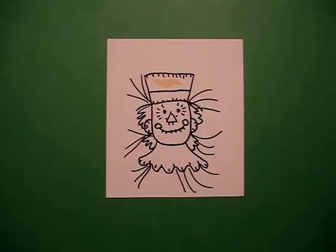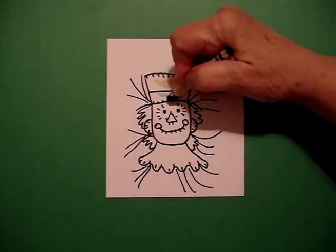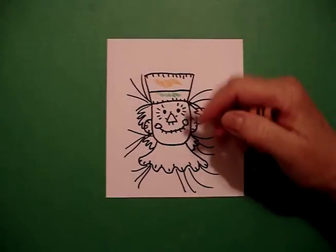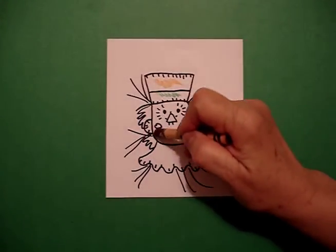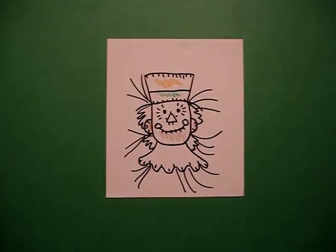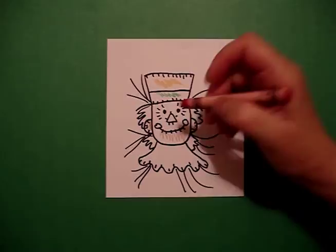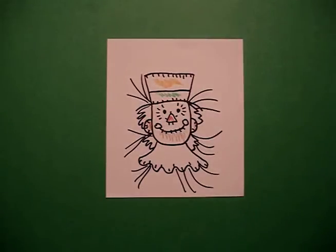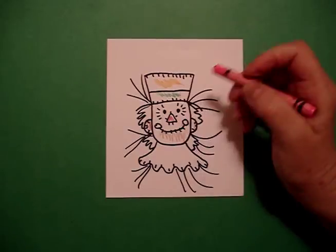So I'm going to do orange on his hat, come in and do green on his brim, color his face that you can see and his ears, don't forget his ears, brown. Come in and do his little triangle nose, red. Do his cheeks, pink.